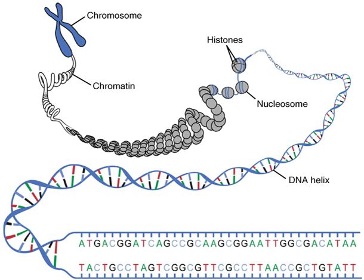If the length is bounded, then it can be encoded in constant space, typically a machine word, thus leading to an implicit data structure taking n+k space, where k is the number of characters in a word (8 for 8-bit ASCII on a 64-bit machine, 1 for 32-bit UTF-32/UCS-4 on a 32-bit machine, etc.). If the length is not bounded, encoding a length n takes log(n) space (see fixed-length code), so length-prefixed strings are a succinct data structure, encoding a string of length n in log(n)+n space.